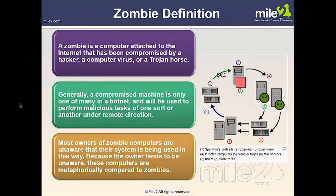There's something called a zombie — computers connected to the internet that have been compromised by a hacker. They may have a virus, a Trojan, or some sort of malware on their system. The thinking is you could have many systems across the world that are compromised and become like little robots. They're part of a botnet — a robot network — and they're used to perform malicious tasks on other computers as a group effort, which makes the impact very much magnified.